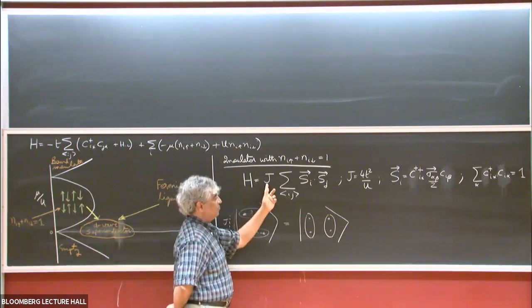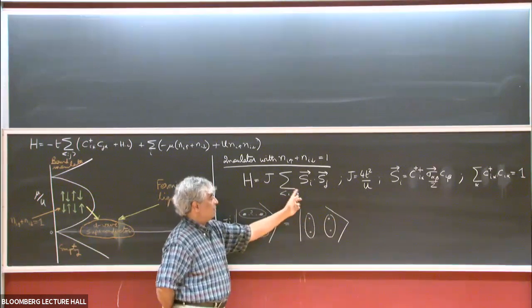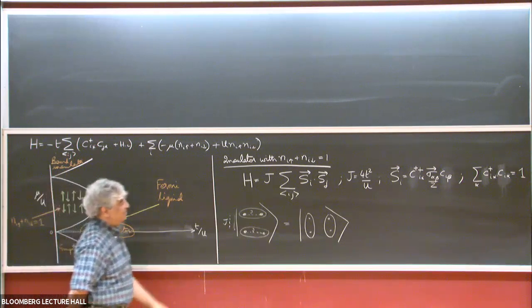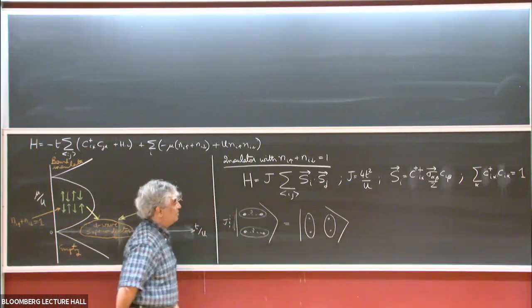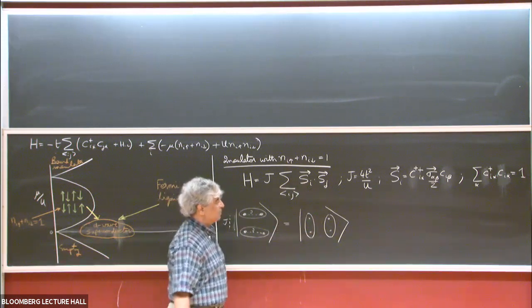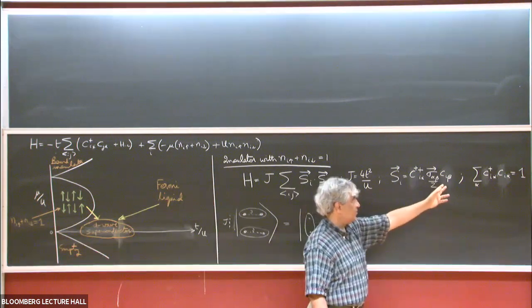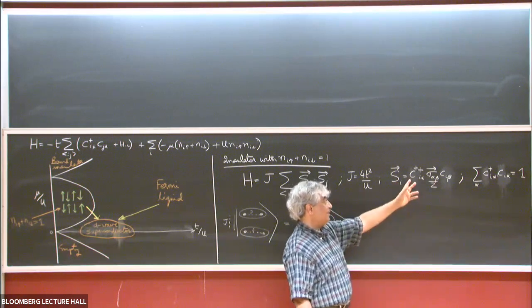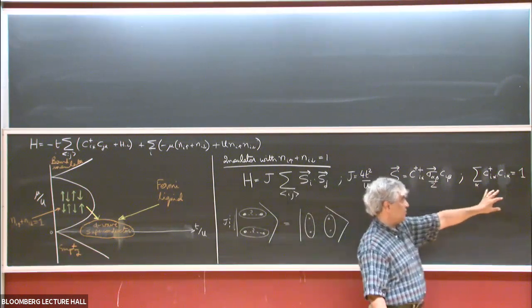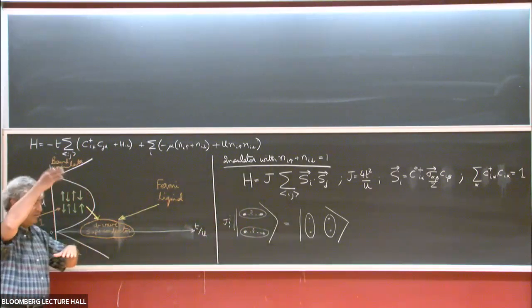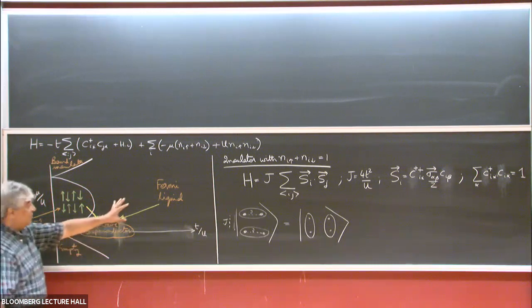That degeneracy is lifted by this superexchange Hamiltonian. There's a positive coupling J which is 4t² over U, acting between nearest neighbors. Because this t is between nearest neighbors, if you had further-range t you would also have next-nearest-neighbor interactions. This is just a spin-half operator — just a qubit, two levels. These are not really electrons because this is a Hilbert space where the total number of electrons is always one; this constraint is satisfied in the low-energy subspace after we integrated out all the doubly occupied sites.